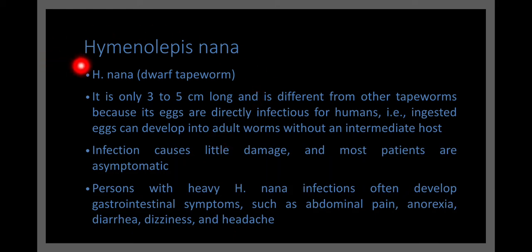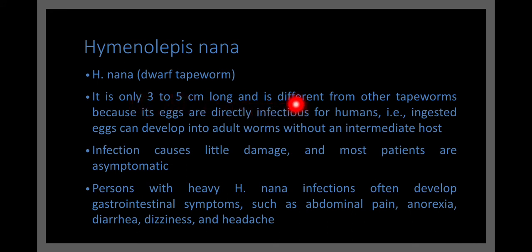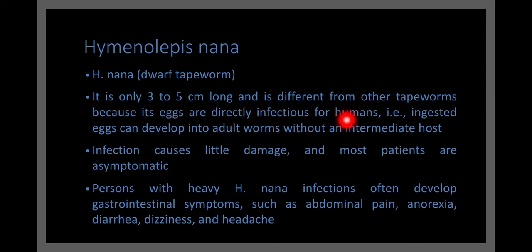Hymenolepis nana, or H. nana, is commonly known as dwarf tapeworm and it is only 3 to 5 centimeters long. It is different from other tapeworms or cestodes because its eggs are directly infectious for humans. Ingested eggs can develop into adult worms without an intermediate host.